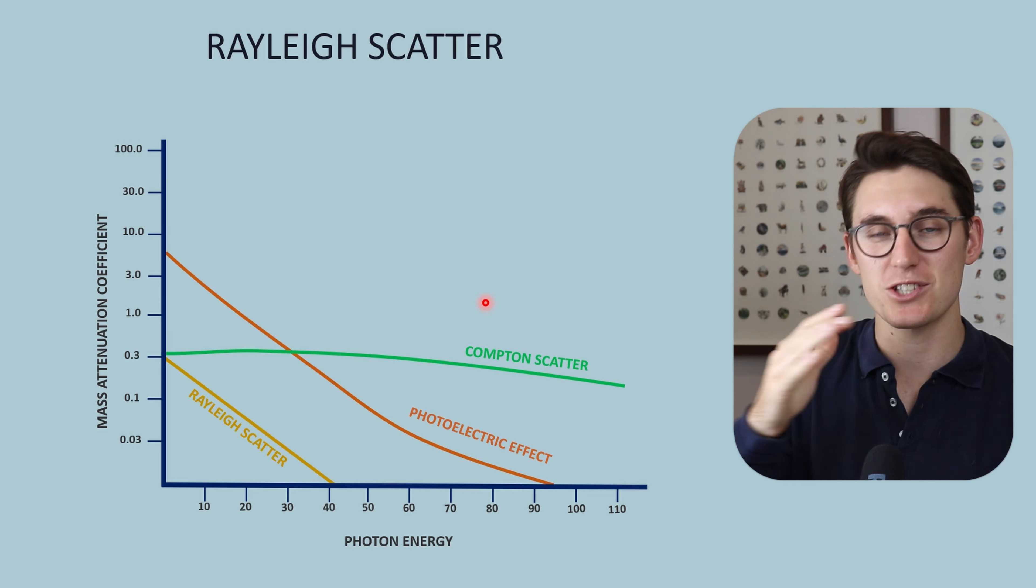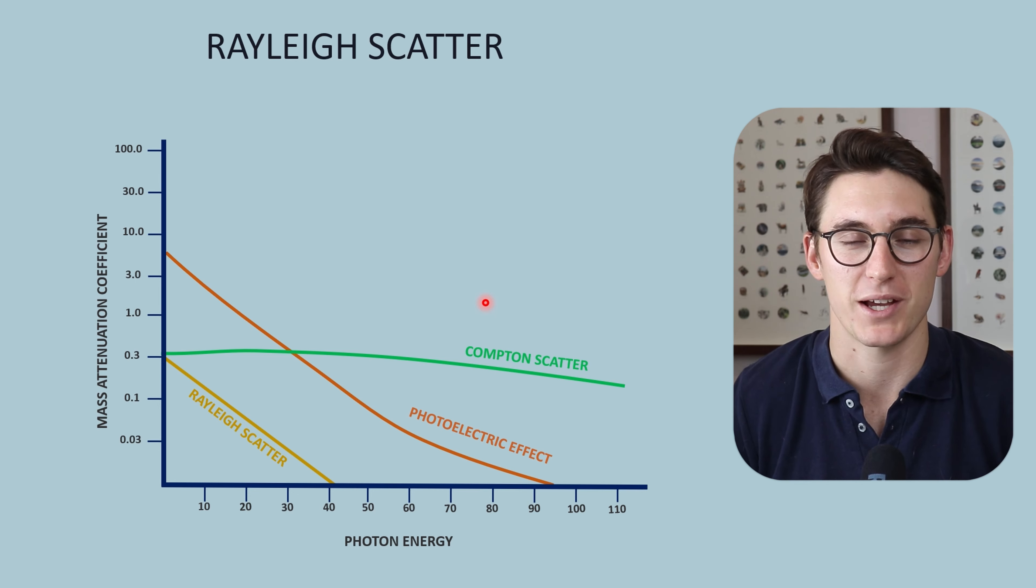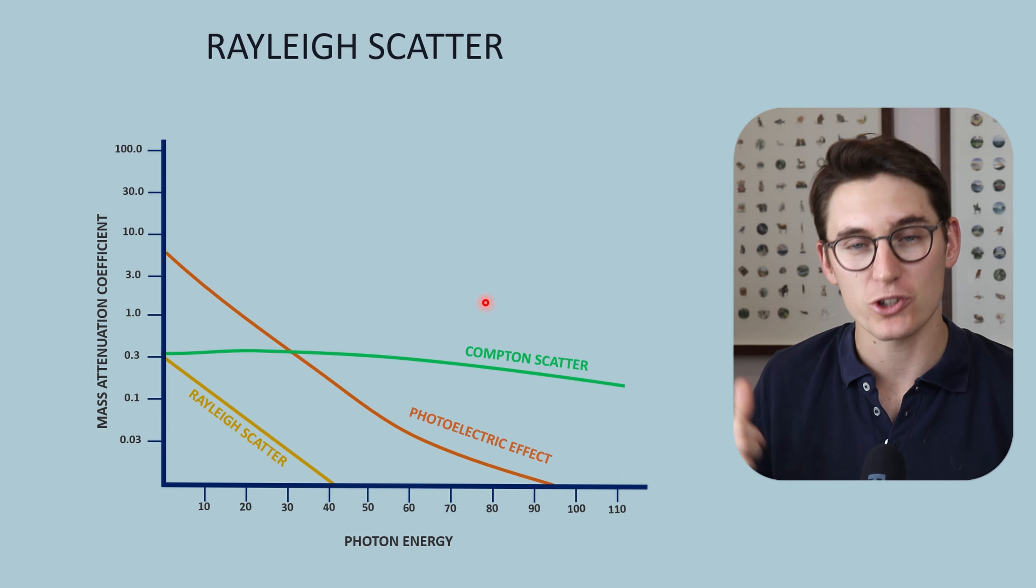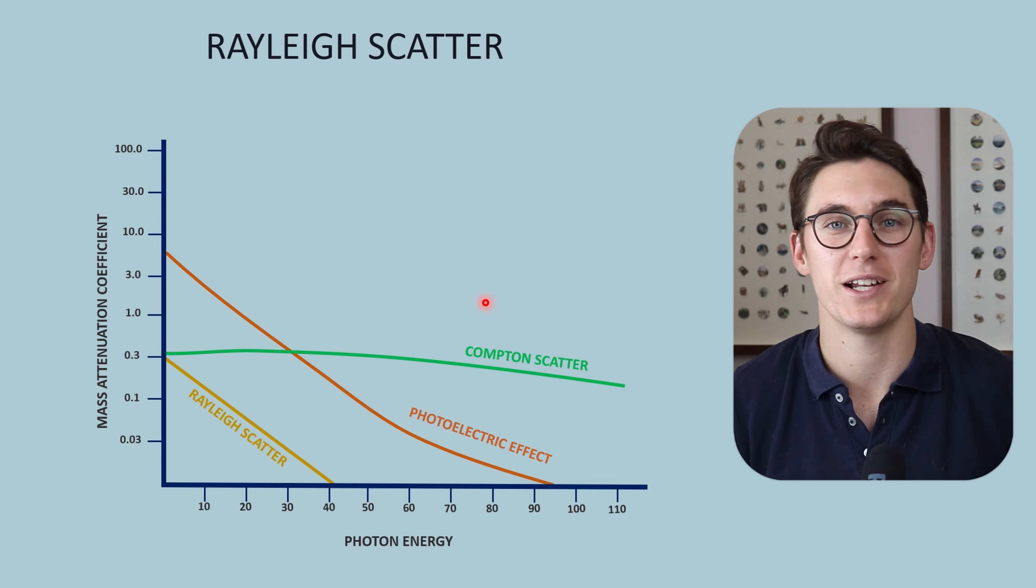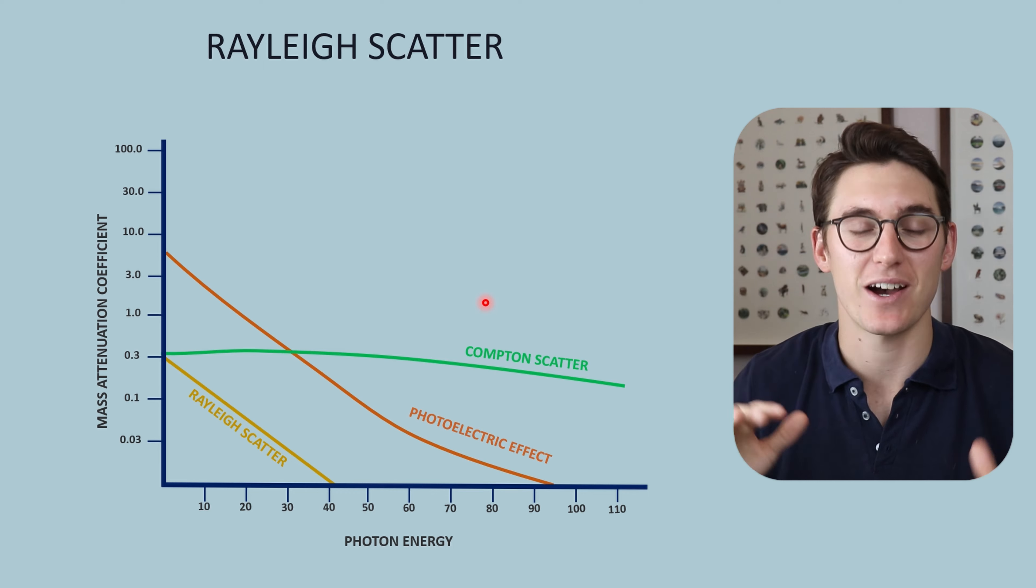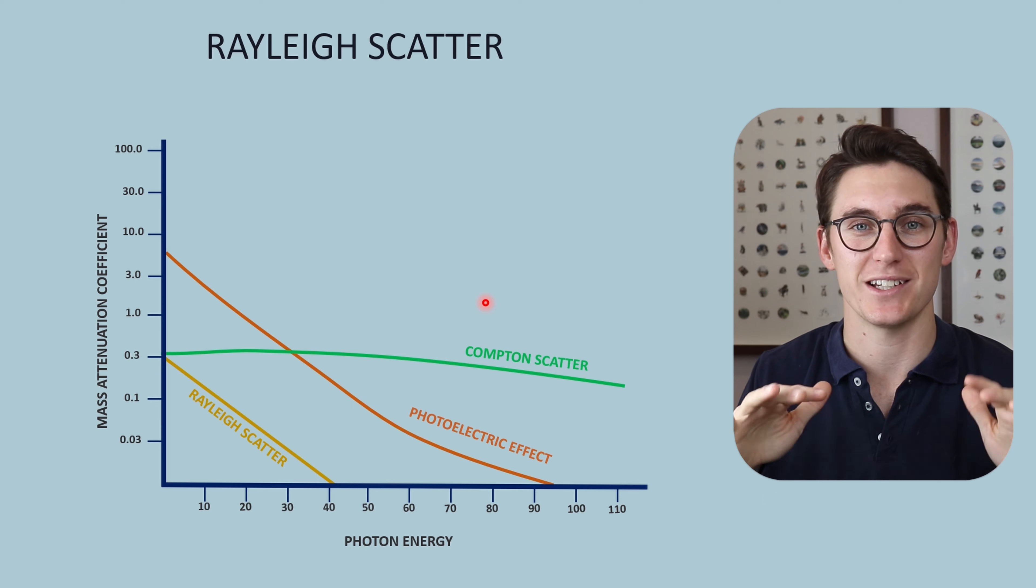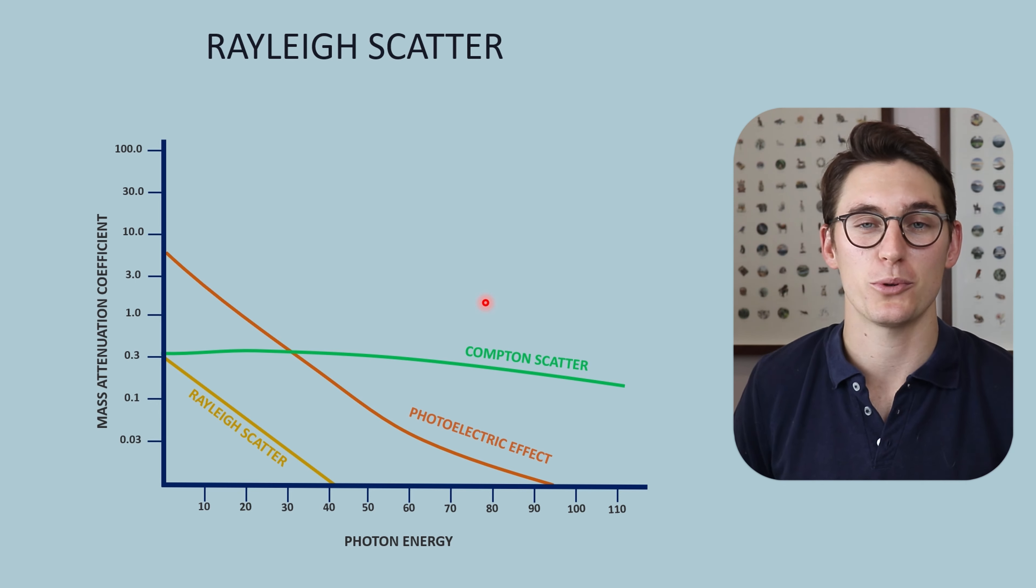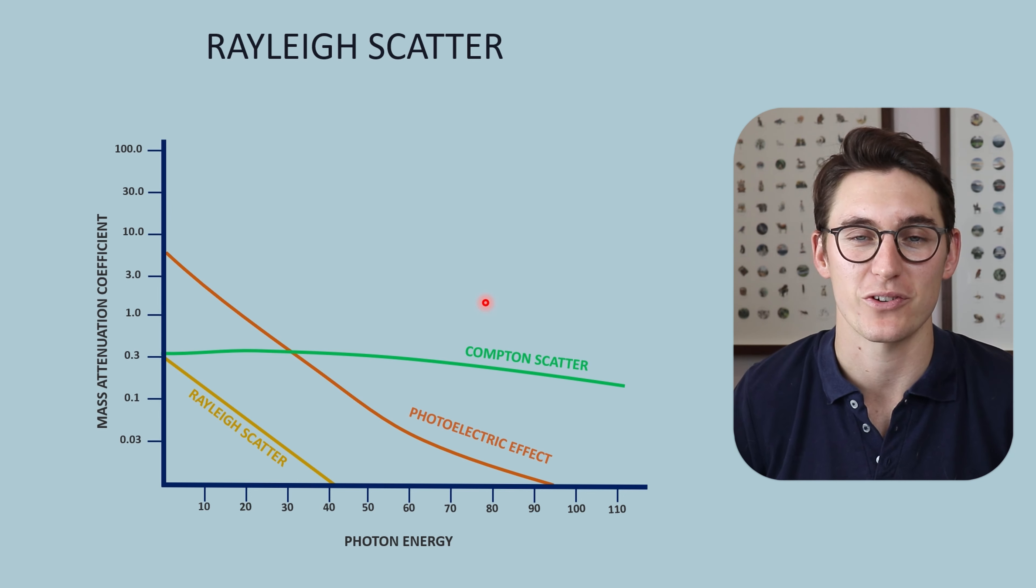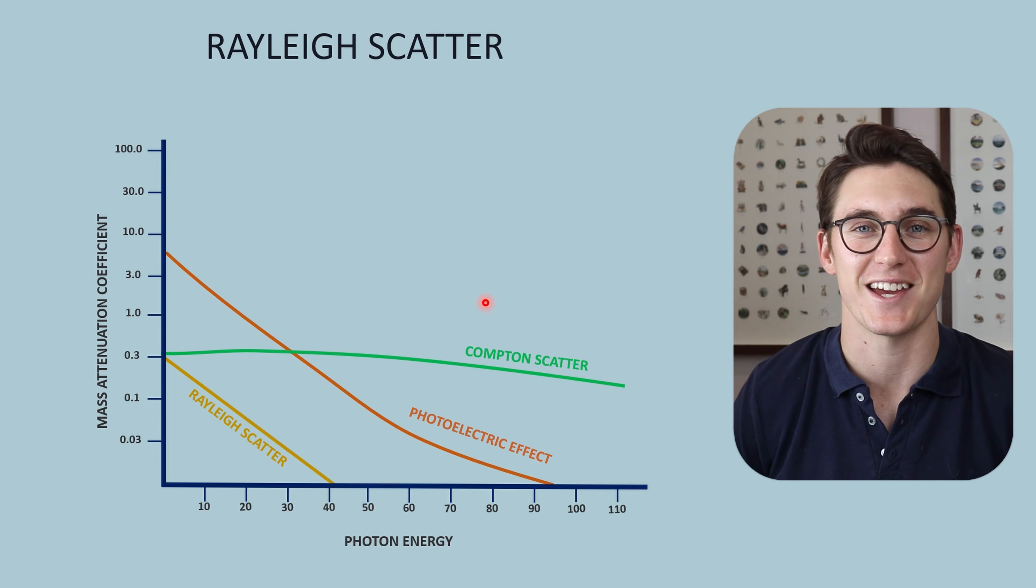I hope going through these three different types of interactions helps you understand how x-rays interact with matter. Next, we're going to be looking at how dose gets inferred to a patient and how we can measure dose within the patient, as well as how we can measure the penetrability of our x-ray beam. After that, we will be looking at the x-rays that leave our patient, the transmitted and scattered x-rays, and see how they interact with our x-ray detectors—our screen film detectors, our computed radiography detectors, as well as our direct and indirect digital radiography systems. So I'll see you all in the next talk where we're going to look at the concept of linear energy transfer. I'll see you there. Goodbye.